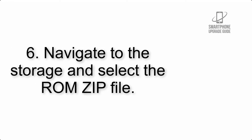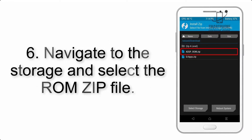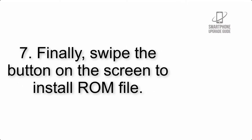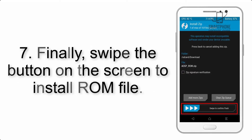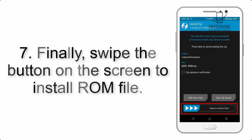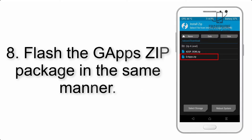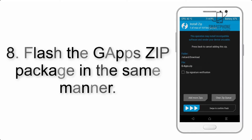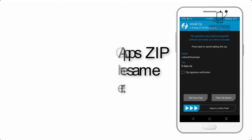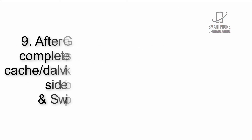Step 5: Go back to the recovery main screen and tap on the Install button. Step 6: Navigate to the storage and select the ROM zip file. Step 7: Finally, swipe the button on the screen to install the ROM file. Step 8: Flash the GApps zip package in the same manner.